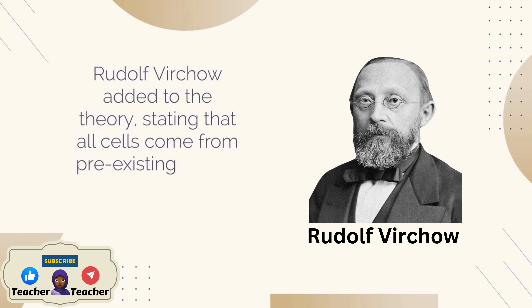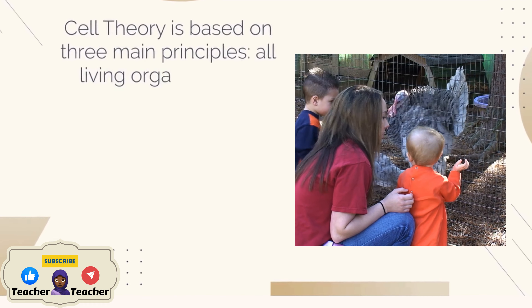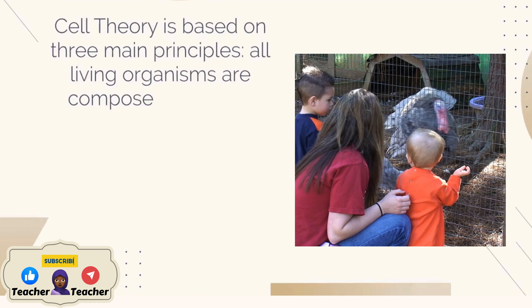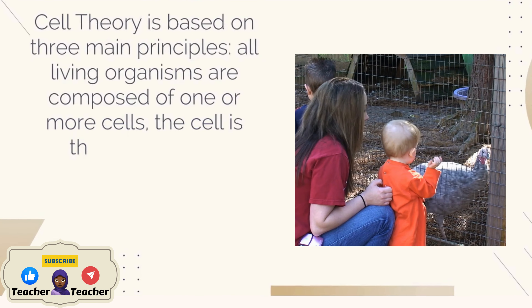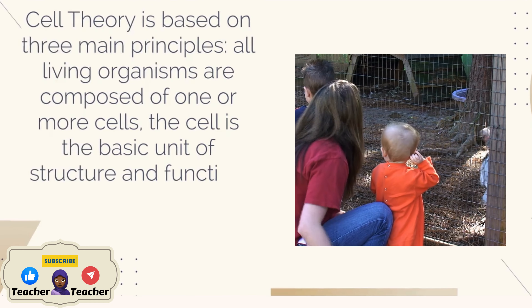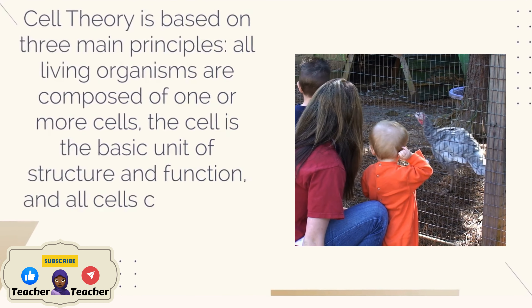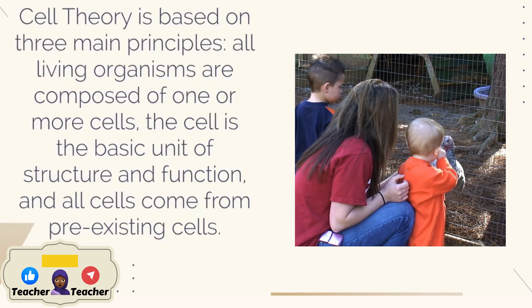Cell theory is based on three main principles: all living organisms are composed of one or more cells; the cell is the basic unit of structure and function; and all cells come from pre-existing cells.